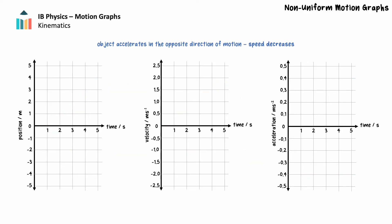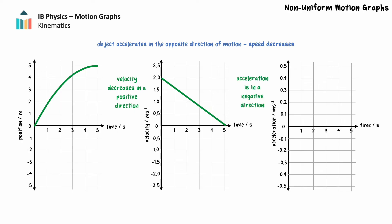If the object moves in one direction and accelerates in another, our graphs will look a little different, as the object will slow down over time. Let's consider an object with a positive velocity but negative acceleration. The position time graph shows the object's position increasing in a positive direction over time. The graph is curved downward, and its steepness decreases with time — the object's velocity decreases over time in a positive direction. Assuming the acceleration is uniform, the velocity time graph will show a straight line above the time axis with a negative gradient. The velocity approaches 0 as the object slows. Since the acceleration is constant and negative, the acceleration time graph will have a gradient of 0 and will be located below the time axis.